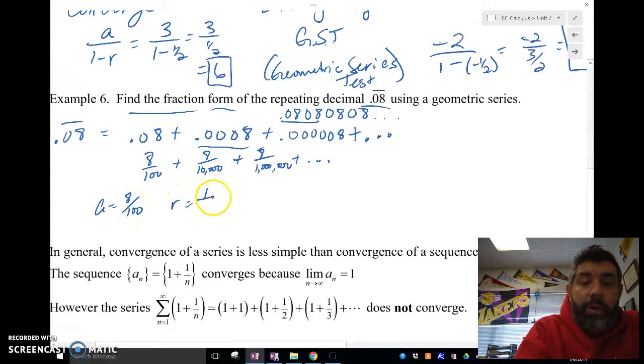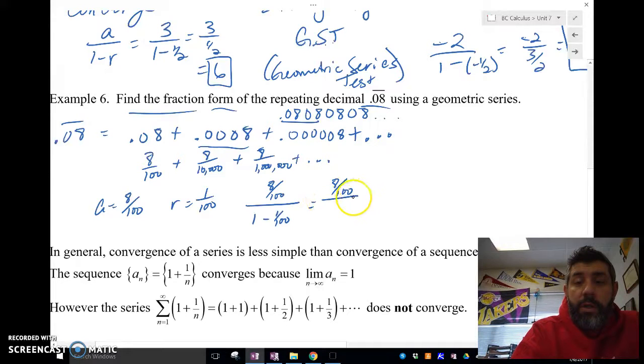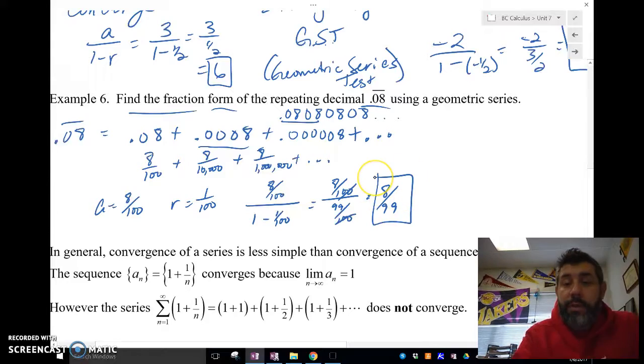So what is A? A is 8 one hundredths. And R is 1 over 100, right? Because I'm multiplying by 1 over 100. So this is going to converge to 8 over 100 over 1 minus 1 over 100. That's going to be 8 over 100 over 99 over 100, which is going to be 8 over 99. That's our answer.